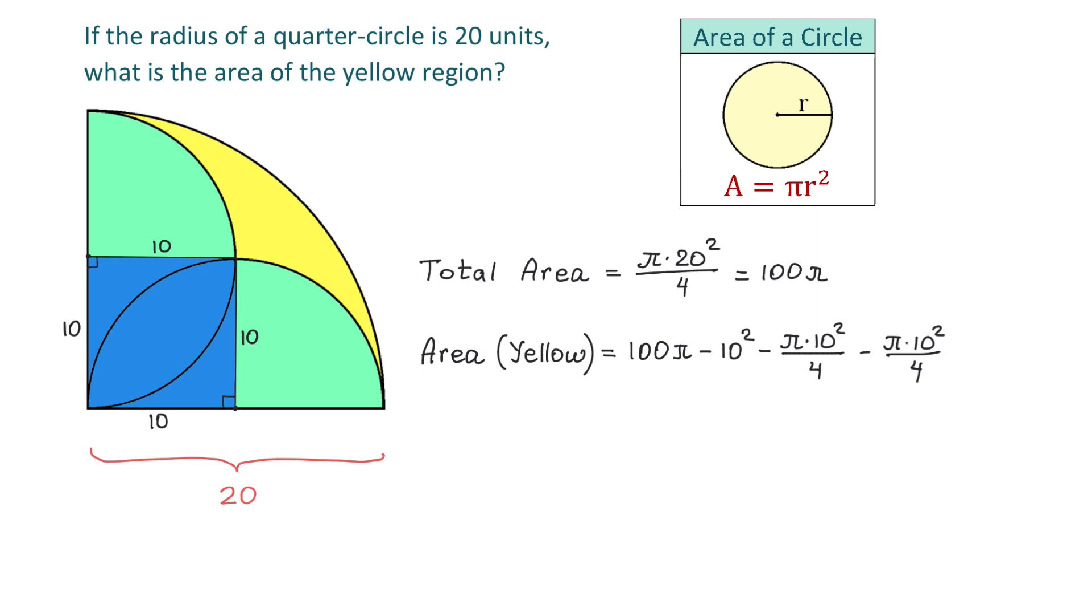And if we simplify this we will have 100 pi minus 100. Then because 10 squared is 100 divided by 4 is 25, we will subtract twice 25 pi. Then the area of the yellow region will be 50 pi minus 100.